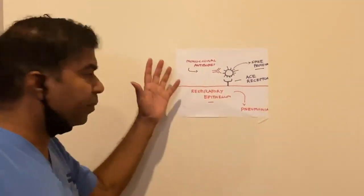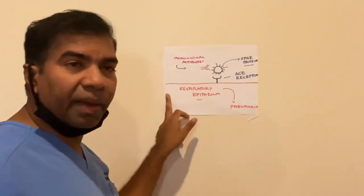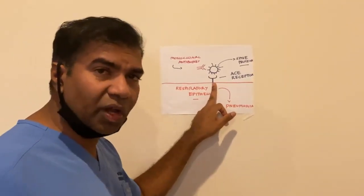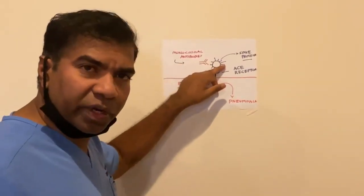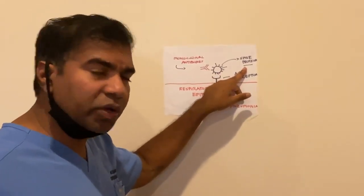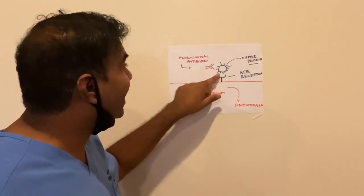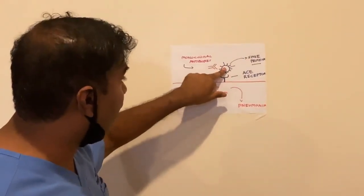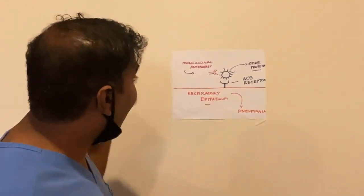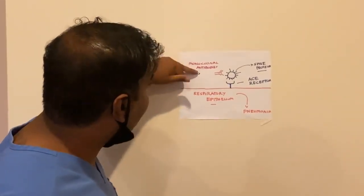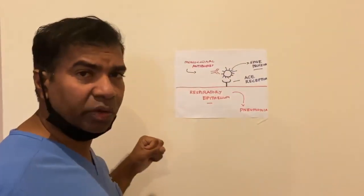Let's talk about this. Here is your respiratory epithelium, with a receptor called the ACE receptor. Now you see the coronavirus here — corona, sun-like — and it's got these spikes, which are called the spike proteins. How does COVID-19 enter the respiratory epithelium and cause pneumonia? It's really because of this spike protein binding to the ACE receptor. That's how it causes disease. Now look at this: when we inject monoclonal antibodies, this monoclonal antibody also binds to the spike receptor on the coronavirus, taking it out of the equation. That's how this works.